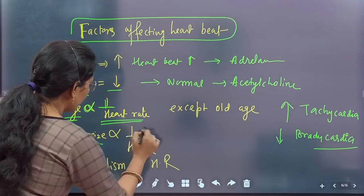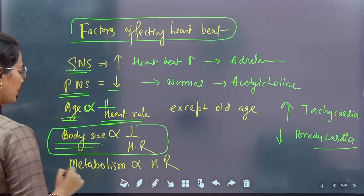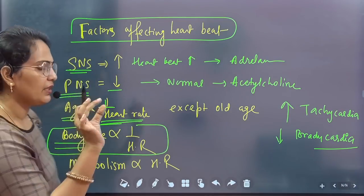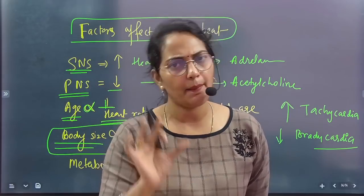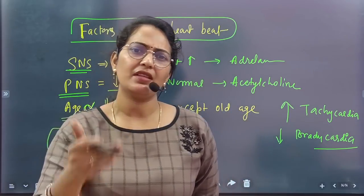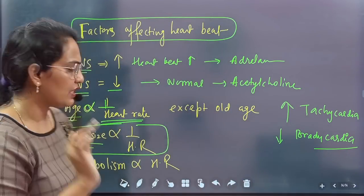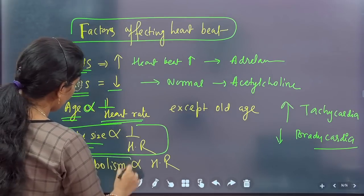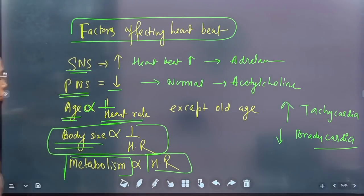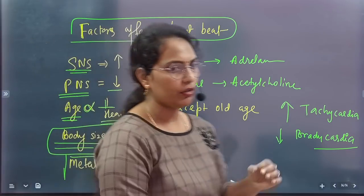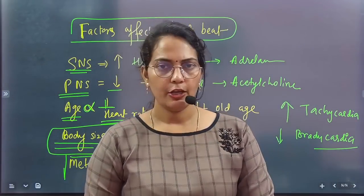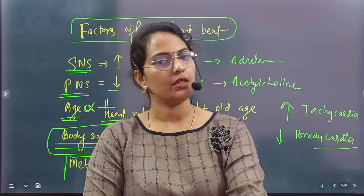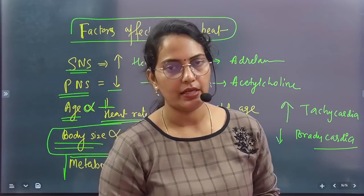Body size also affects heart rate — the smaller the animal, the higher the heart rate. For example, a shrew has 300–400 heartbeats per minute, while an elephant has only 10–15 heartbeats per minute. The smaller the body, the faster the metabolism, and therefore the faster the heart rate. These are all the important things covered in today's lecture. If you prepare these notes, they will be very beneficial for you.